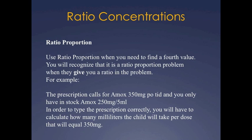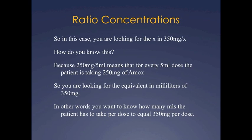The prescription calls for Amoxicillin 350 milligram PO TID and you only have in stock Amoxicillin 250 milligram per 5ml. In order to type the prescription correctly, you will have to calculate how many milliliters the child will take per dose that will equal 350 milligrams. So in this case you are looking for the x in milliliters or the milliliters in 350 milligrams per x ml.